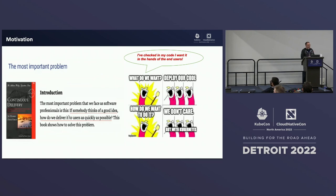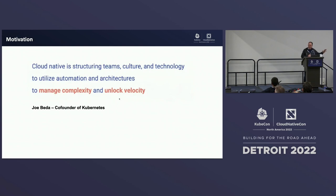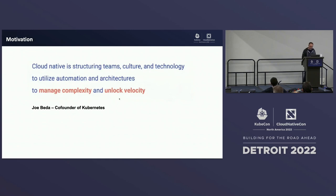For those of you that have a little gray in your beard like me, if you remember back about 15 years ago, the book Continuous Delivery by Jez Humble and David Farley nailed what is the preeminent challenge for us: if somebody thinks there's a good idea, how do we quickly get that in front of our users? That is still the challenge we're all moving towards. Even up to today, we built bigger cloud-native infrastructure, but we're still running into this issue.